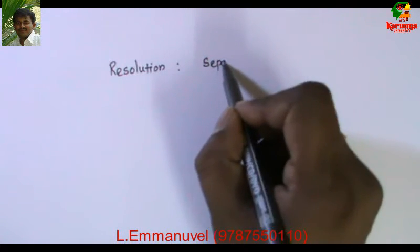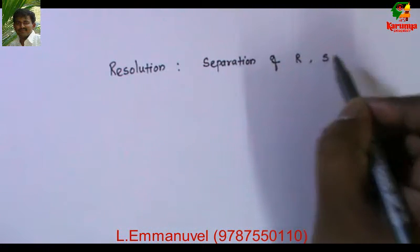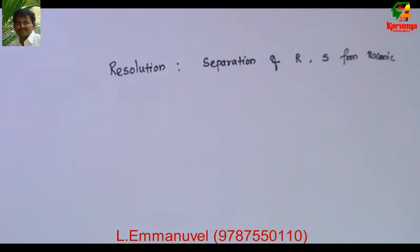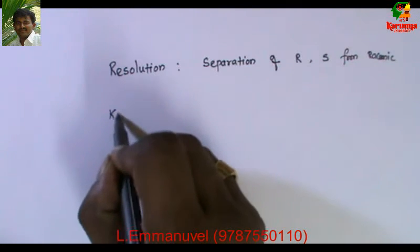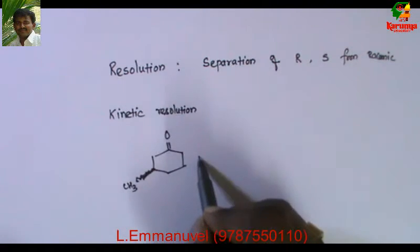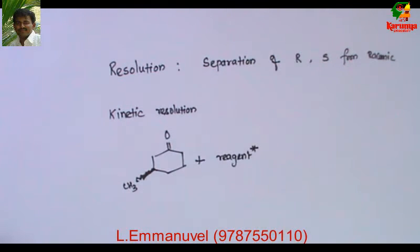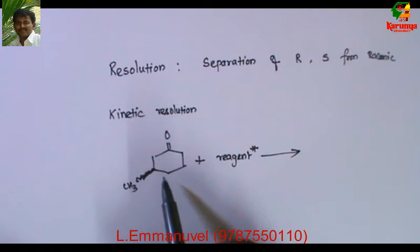Diastereomers can be separated by column chromatography, but enantiomers cannot be separated by column chromatography. So how can we separate them? The technique we use is kinetic resolution. In this method, we add a chiral reagent — this reagent is chiral — which reacts with only one stereoisomer predominantly to give the product.